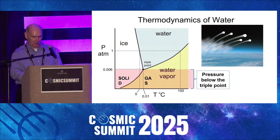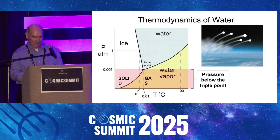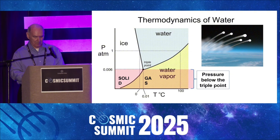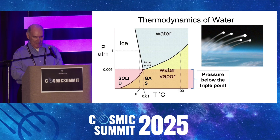Below the triple point of water, which is at six thousandths of an atmosphere, water can only exist as a solid or a gas. Any liquid water that was ejected by the extraterrestrial impact or by piggybacking on an ice chunk quickly turned into ice crystals. Any wet ice boulders would have left a trail of ice crystals during their trajectories in the vacuum of space.